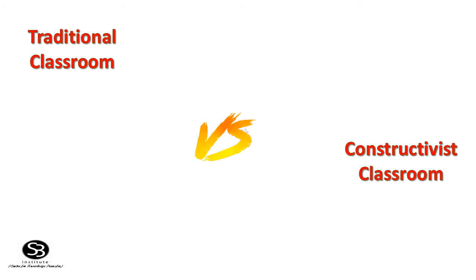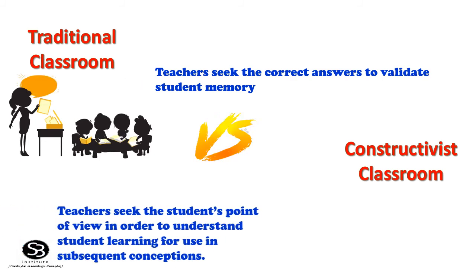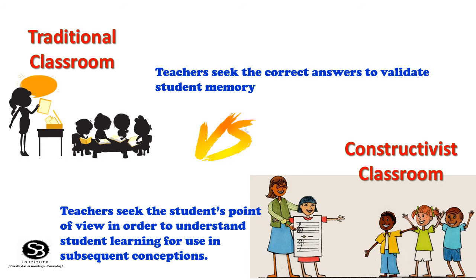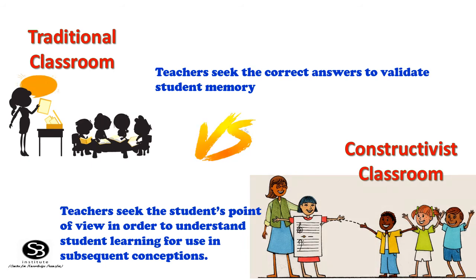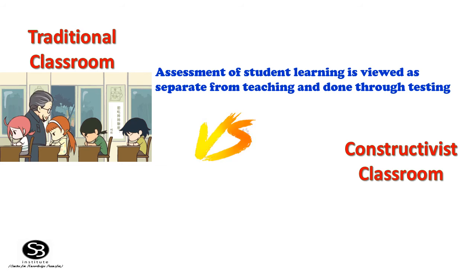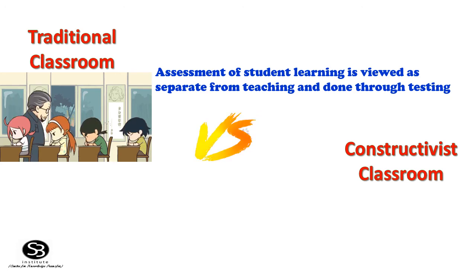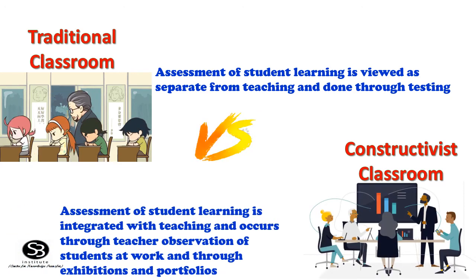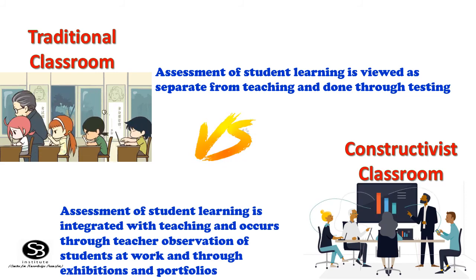In a traditional classroom, teachers seek the correct answer to validate the student's memory. In a constructivist classroom, teachers seek the student's point of view in order to understand student learning for use in subsequent lessons. In a traditional classroom, assessment of student learning is viewed as separate from teaching and is done through tests. In a constructivist classroom, assessment of student learning is integrated with teaching and occurs through teacher observation of students at work, and through exhibitions and portfolios.